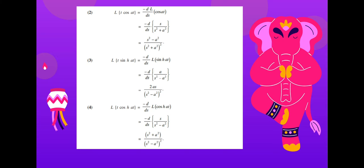For the Laplace transform of t·cosh(kt): here instead of plus we have minus, so it is minus d/ds of s/(s² - a²). Following the same procedure as in the previous problem, the result is (s² + a²)/(s² - a²)².